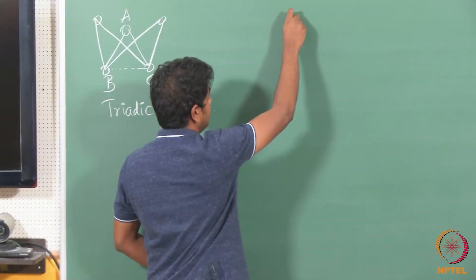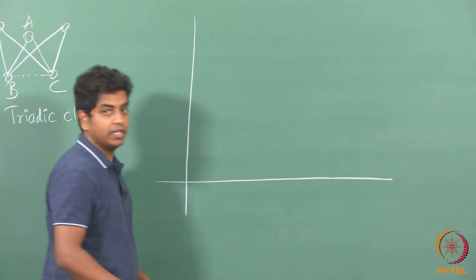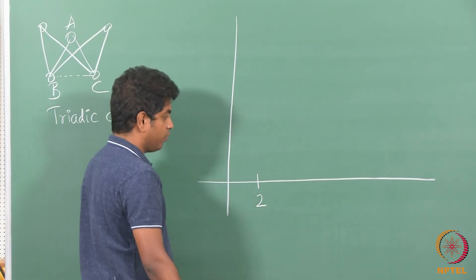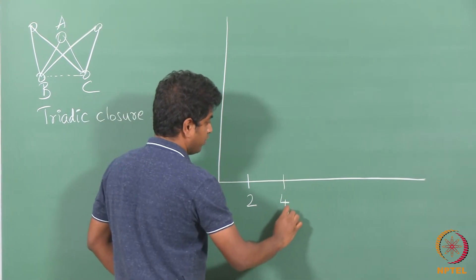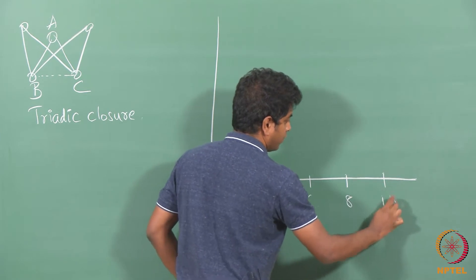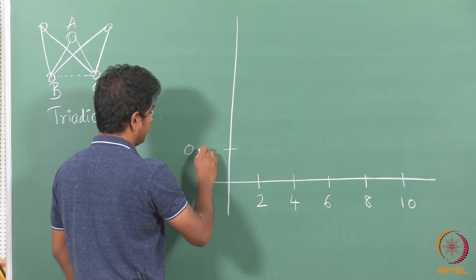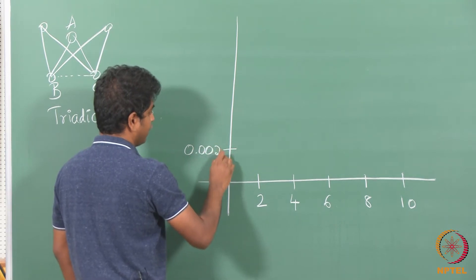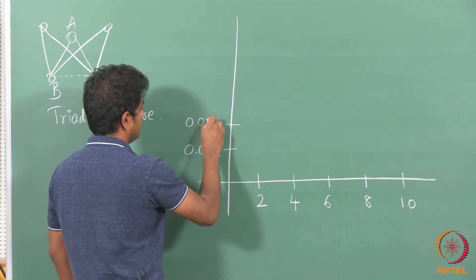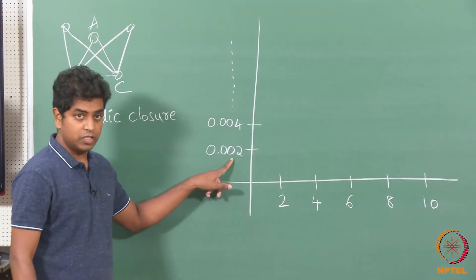Researchers considered the email communication network and tried plotting the following: if there are 2, 4, 6, 8, or 10 common friends, what is the probability of them becoming friends — say 0.002, 0.004, and so on. The probability is observed to be very small.